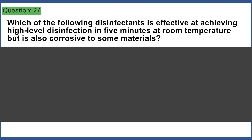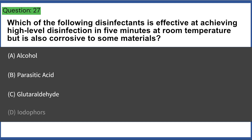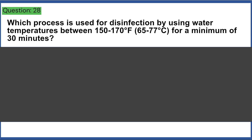Which of the following disinfectants achieves high-level disinfection in five minutes at room temperature but is also corrosive to some materials? a) alcohol, b) peracetic acid, c) glutaraldehyde, d) iodophors. Answer: B, peracetic acid.